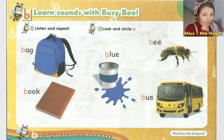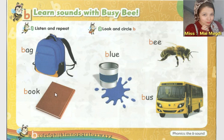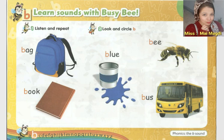Now let's go to phonics time with Busy Bee. Number one: bag — bag means شنطة. Number two: book — book means كتاب. Number three: blue — blue is a color, blue means أزرق. Number four: bee — bee means نحلة. Number five: bus — bus means أتوبيس.